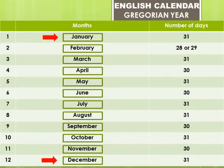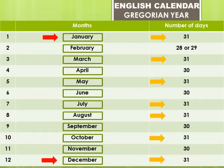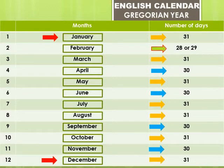The 11th month is November and the 12th month is December — D-E-C-E-M-B-E-R. December has 31 days. So students, January, March, May, July, August, October, and December — these 7 months have 31 days. April, June, September, and November have 30 days. And February has 28 or 29 days.